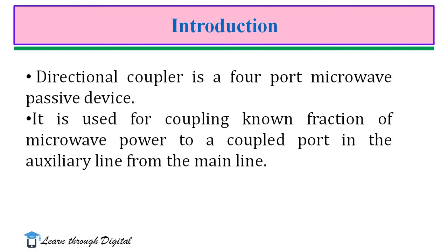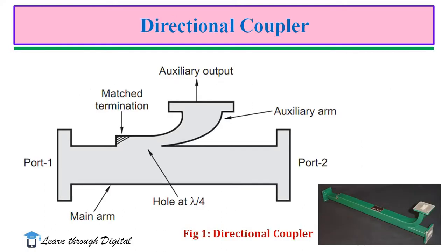A Directional Coupler is a four-port microwave passive device. It is used for coupling a known fraction of microwave power to a coupled port in the auxiliary line from the main line. It consists of two waveguides: a primary waveguide and a secondary waveguide, otherwise called the main arm and auxiliary arm. It is generally used to measure incident power if it is a unidirectional coupler, or it may be bidirectional, used for measuring both incident and reflected power.